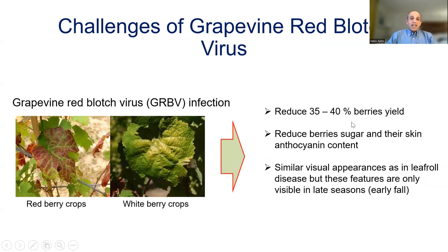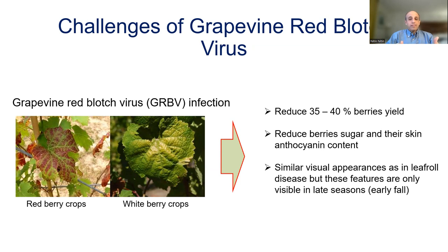One of the key challenges in detection of grapevine red blotch viruses is that these viruses have significant persistence and prevalence in many grape growing regions. They can reduce the yield of the berries significantly, also reduce the berries' sugar content and anthocyanin content in the skin. These viruses have many similar features to other viruses such as leaf roll disease, and these features are often visible only in the late season, that is early fall. In addition, there are other nutrient stresses and agronomical factors that can produce similar redness or blotch features, making it difficult to detect these diseases visually among the vines.